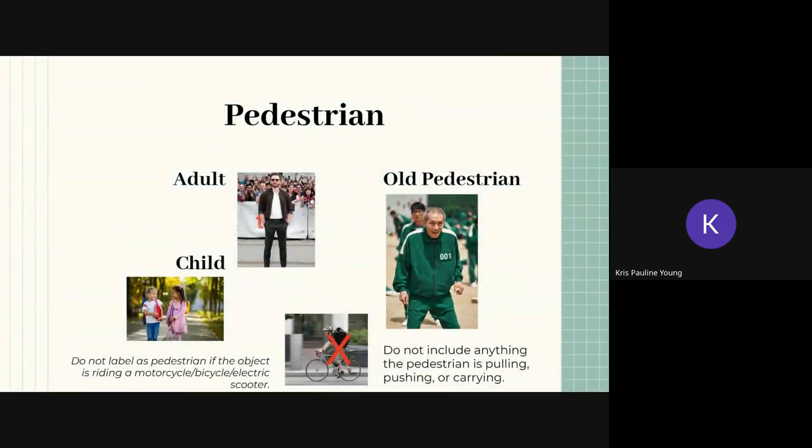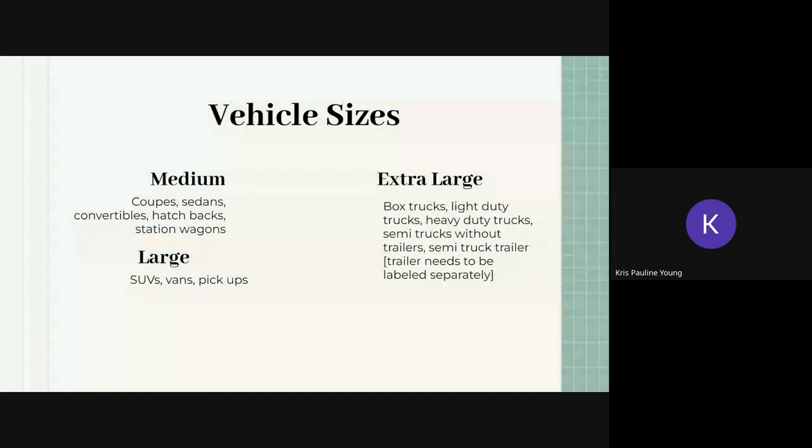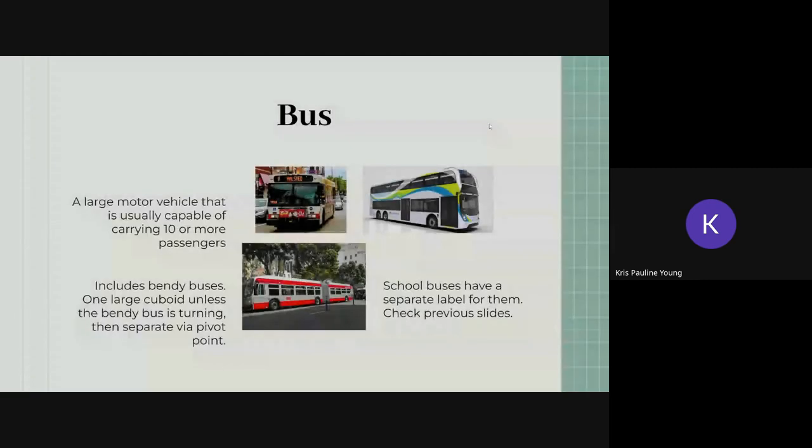For pedestrians, we have different kinds depending on their age, so we have an adult, a child, or an old pedestrian. Most common one you'll find is adult pedestrian. Vehicle sizes, three different sizes here. First up is a medium vehicle, which are your sedans, your convertibles, vehicle station wagons. And then moving on from that are the somewhat larger vehicles such as an SUV, a van, or a pickup truck.